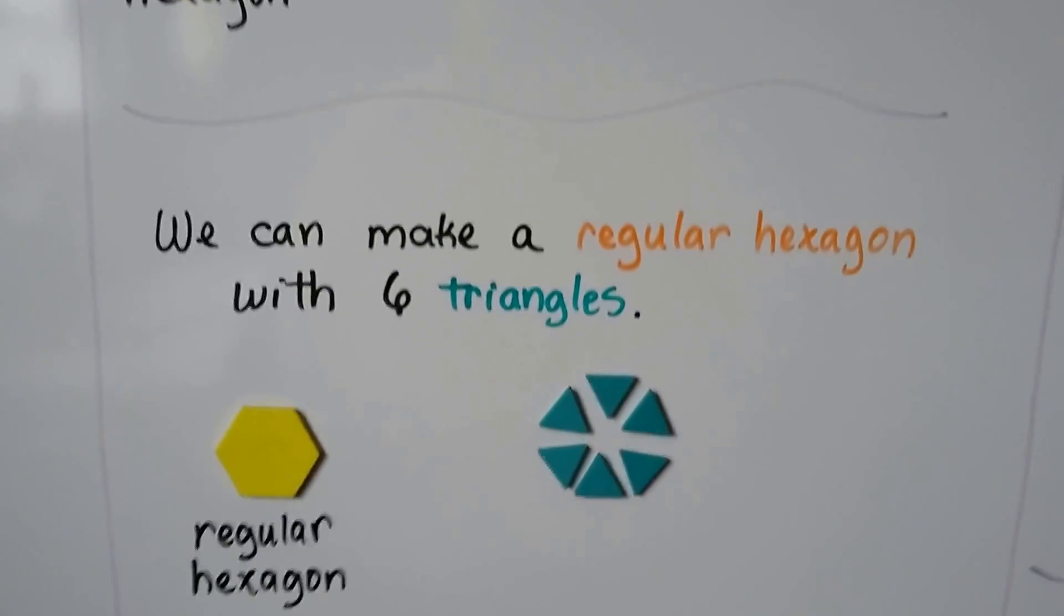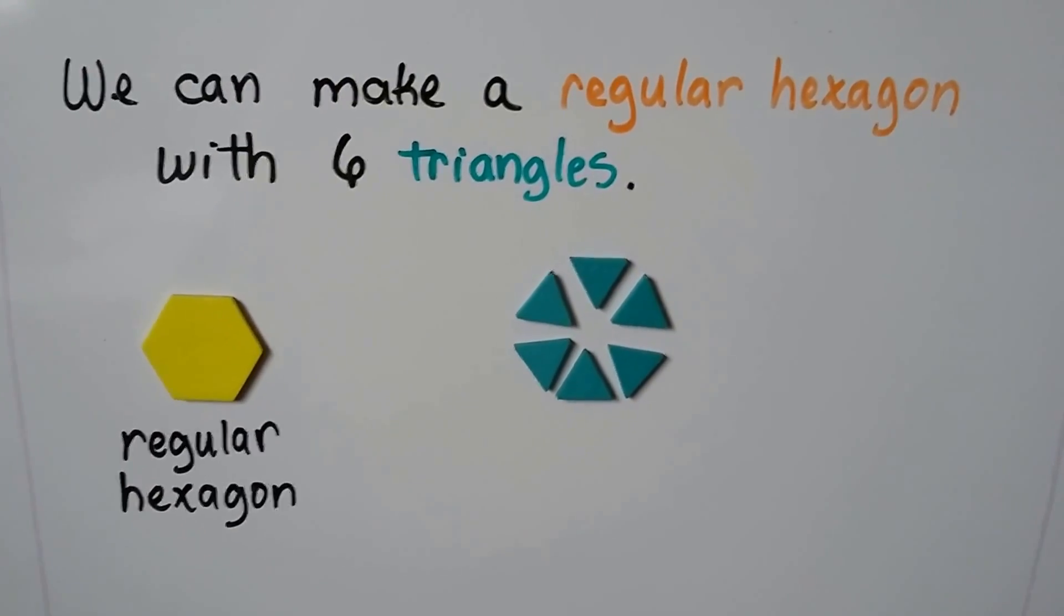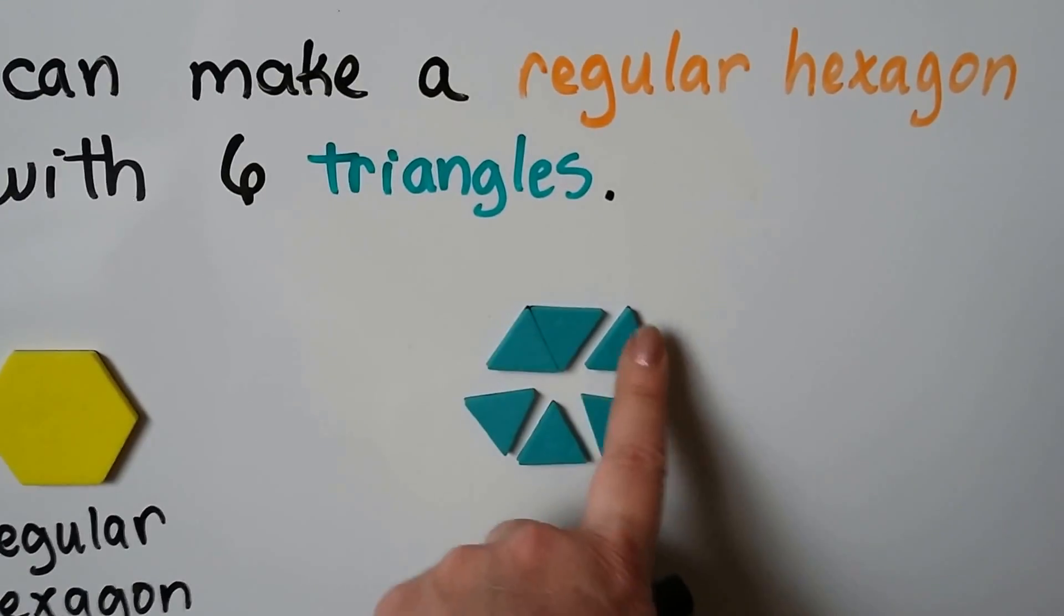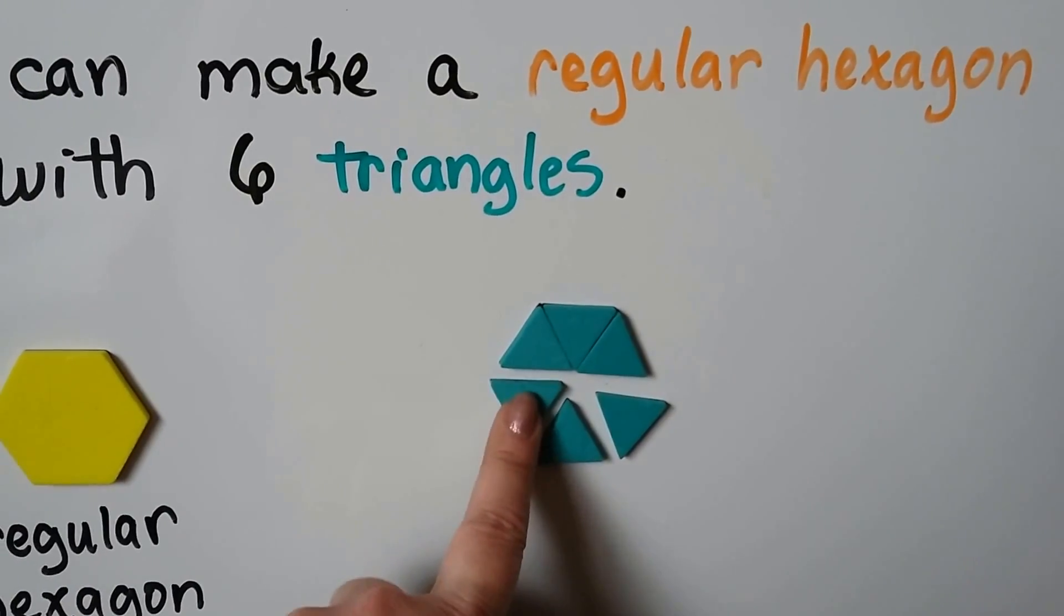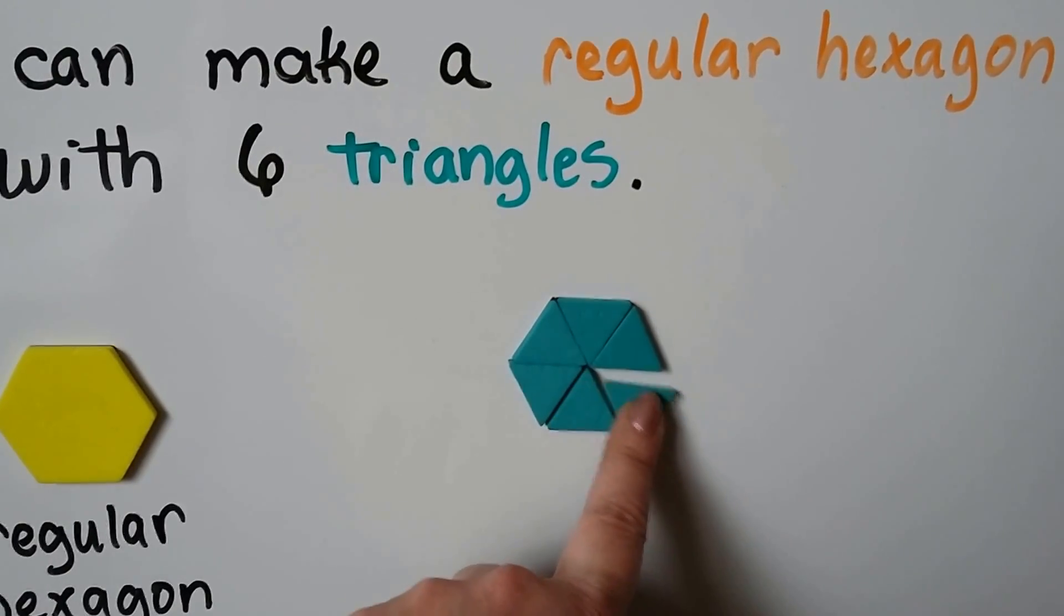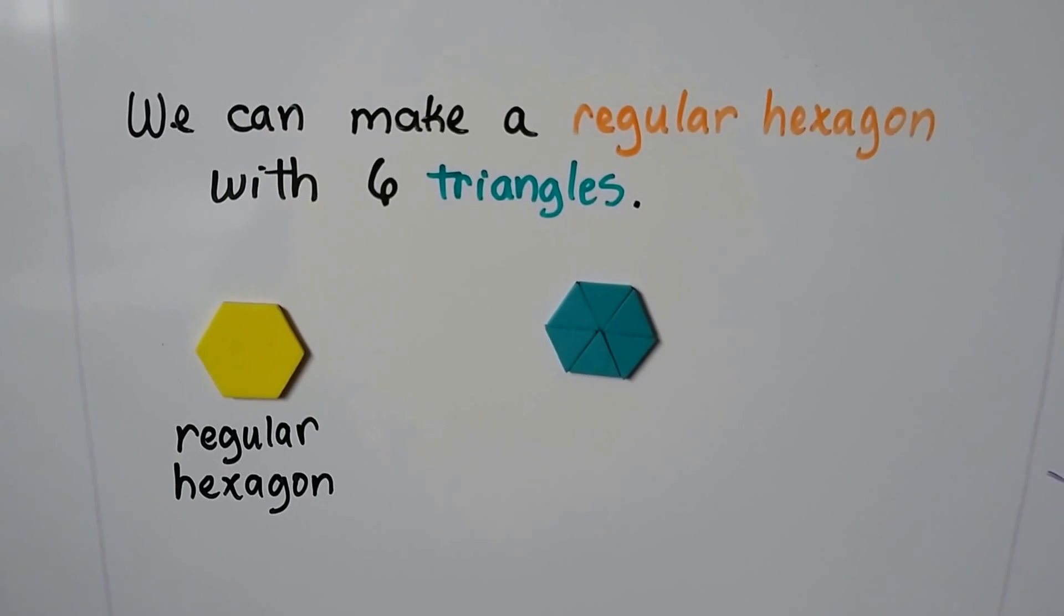We can make a regular hexagon with six triangles. We can put the triangles together real close, make it so they're touching, and look, it made a regular hexagon.